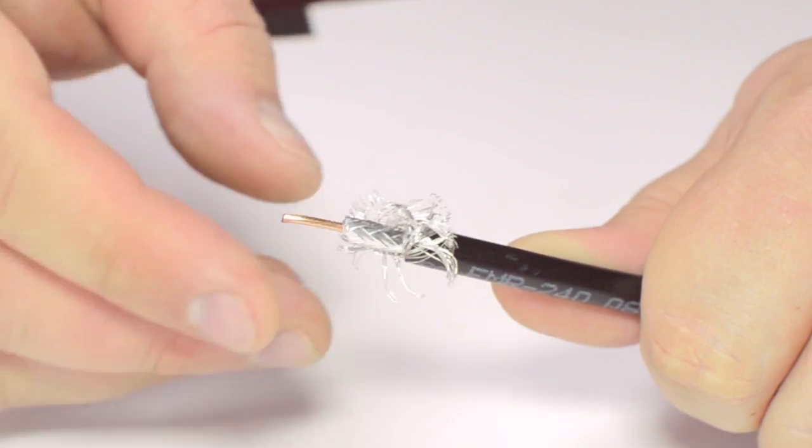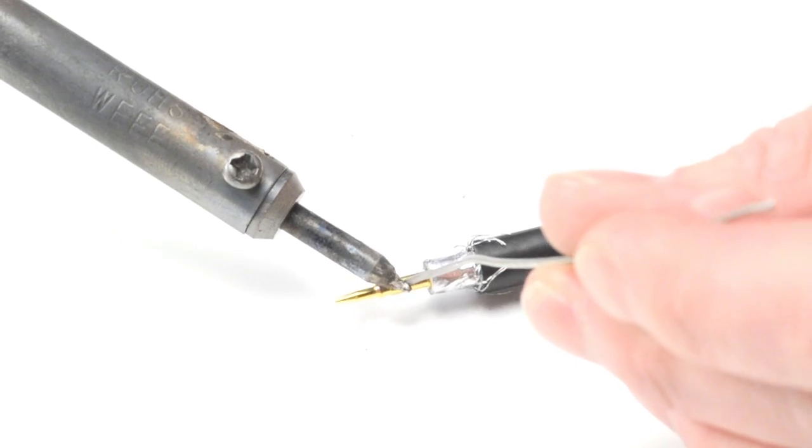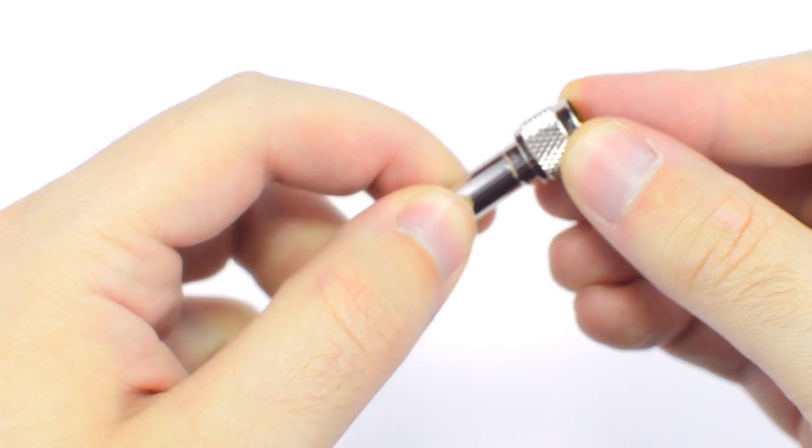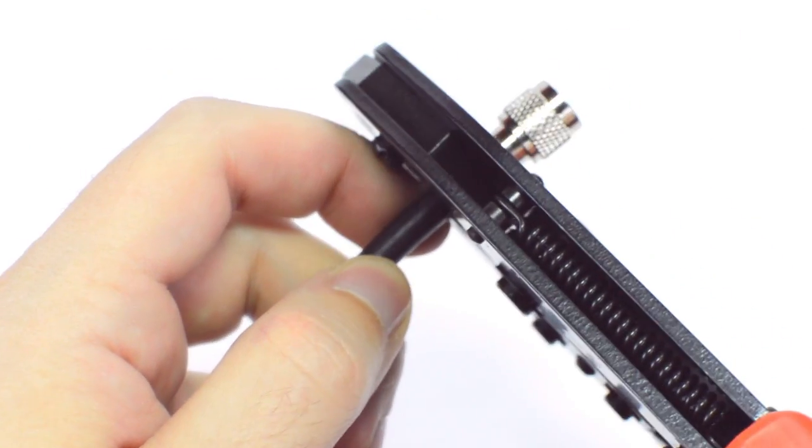Pull back the braided shield and insert the pin onto the center conductor. Solder the pin onto the center conductor and insert the connector housing over the cable. Then slide up the ferrule to the base of the connector, folding the shield with it. Crimp the ferrule under the outer jacket to complete termination.